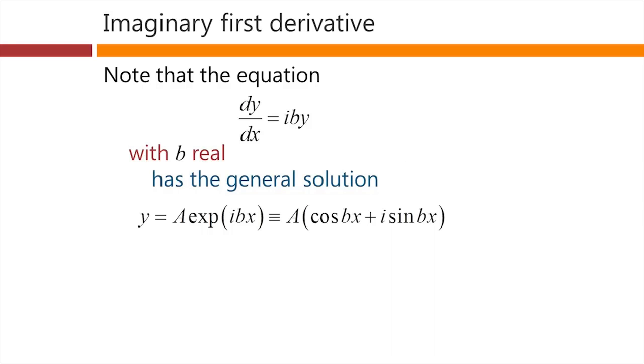With an imaginary constant, the general solution to this equation is of the same form. Instead of a in here, we've got i times b. So the solution is capital A, an undetermined constant, times the exponential of ib times x, which is the same thing, using Euler's formula, as A times cos(bx) plus i sin(bx).